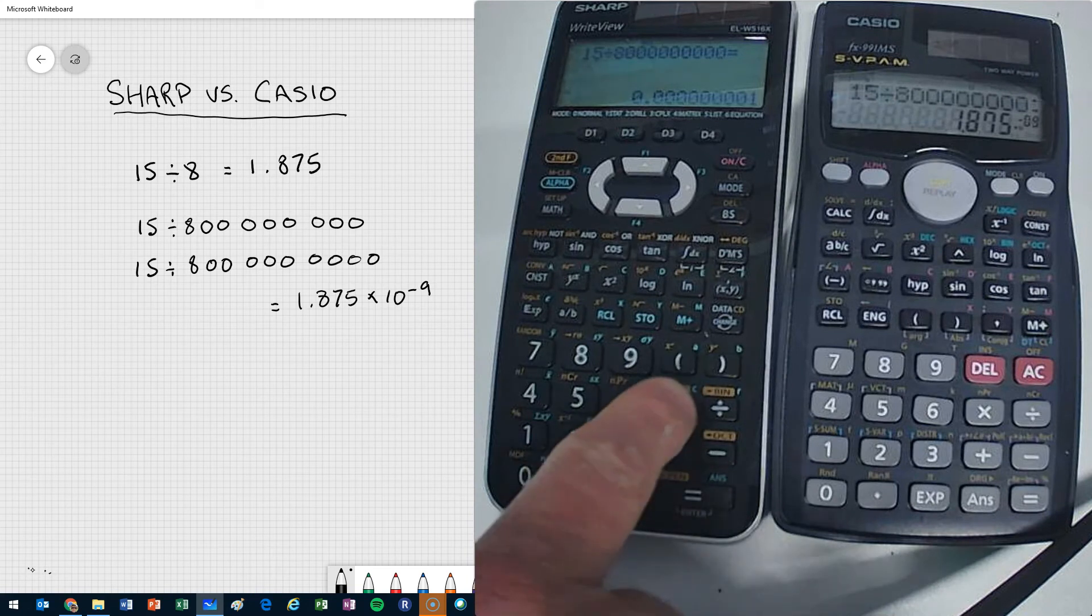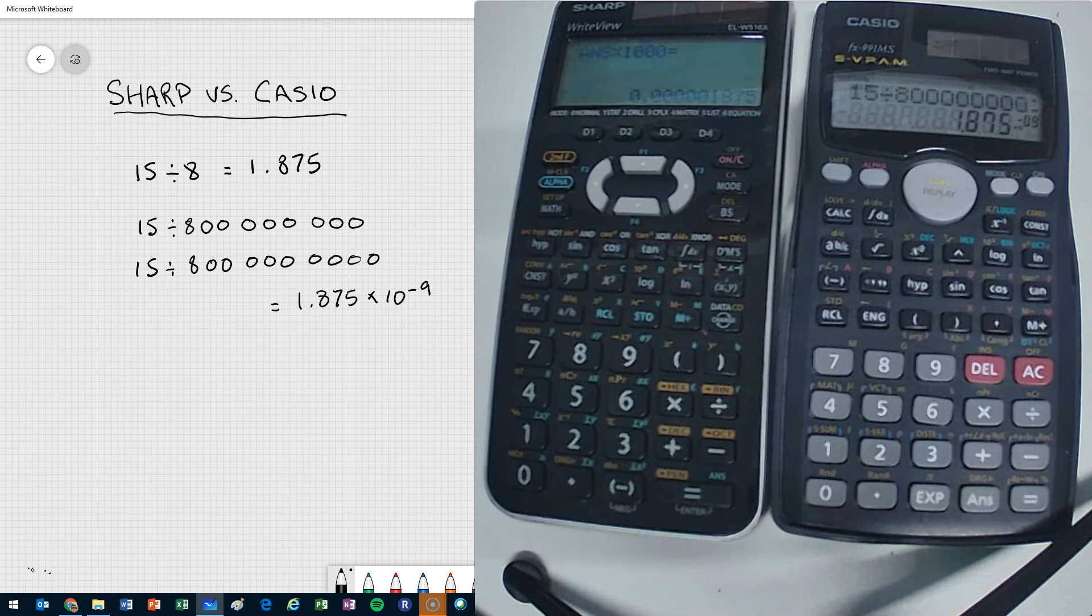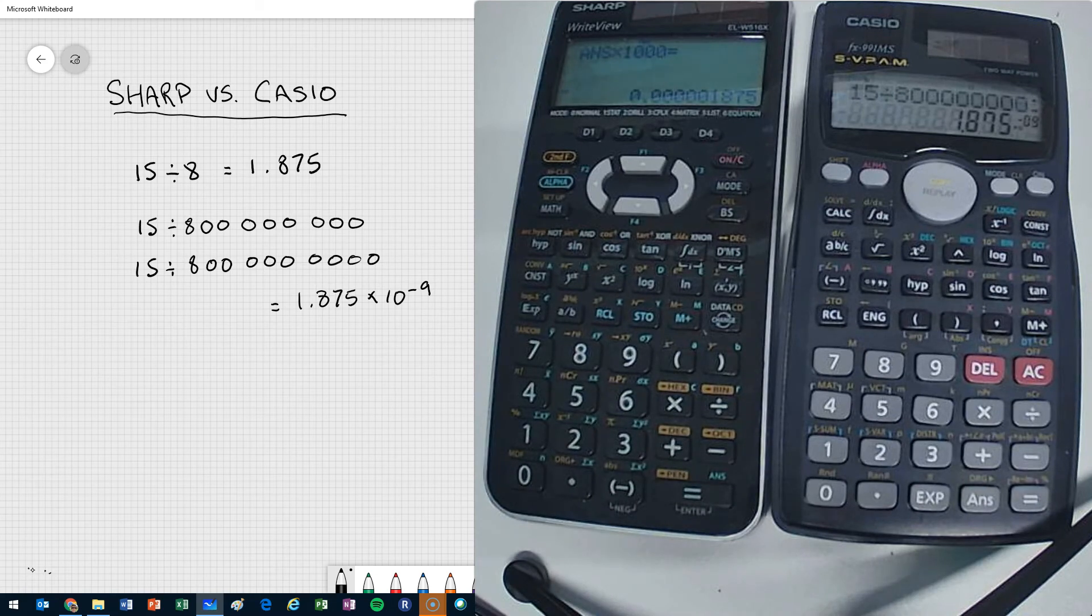So how could you find it? So if you have the SHARP, well, why don't we multiply by 1,000 or something like that, and we can see all of a sudden those missing digits are there.